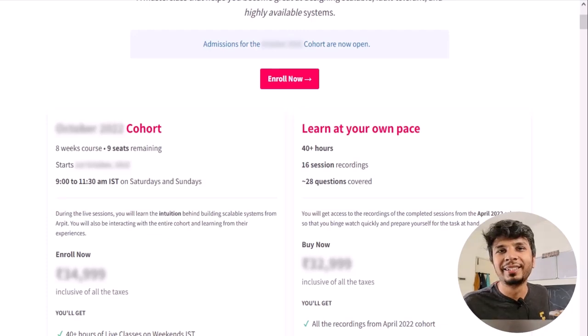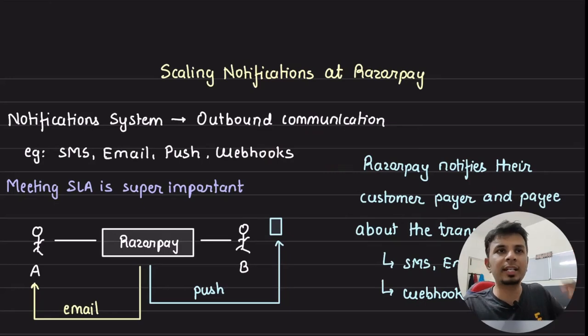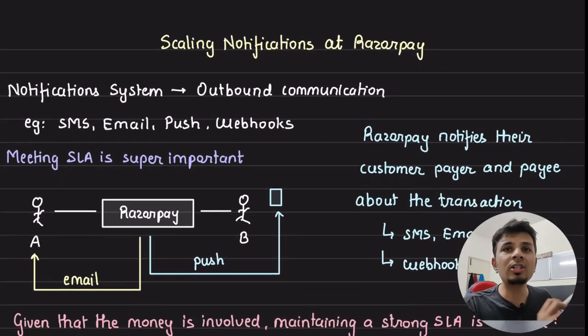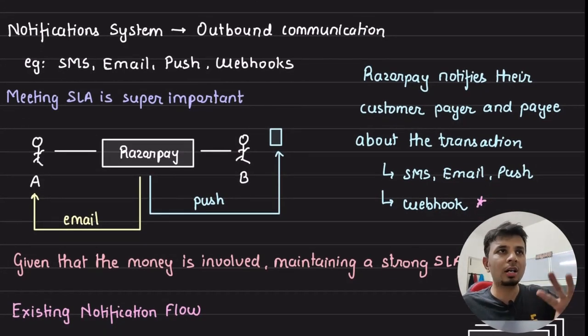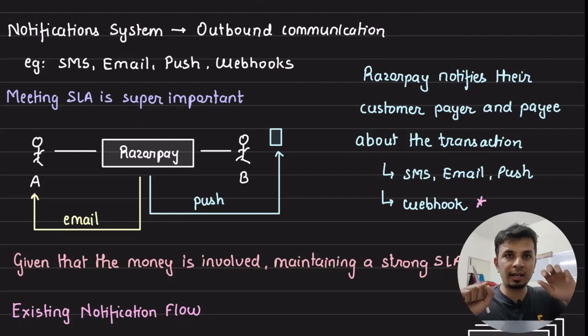Notification systems are primarily your outbound communications. For example, SMSs, emails, push, webhooks and whatnot. Now you'd see why a company like Razorpay, a fintech company would want notifications. For example, if there are two people A and B, and A made a payment via Razorpay and it has to reach B. B is running a business, B is using Razorpay, A is the customer. Now Razorpay needs to send A the email about the invoice as the confirmation of the transaction and it wants to send a push notification to B. It might also need to invoke B's webhook so that B's external systems are integrated.